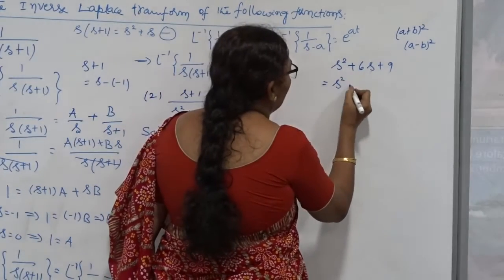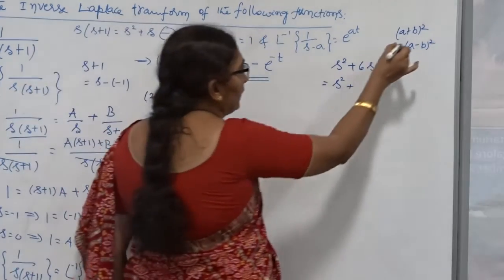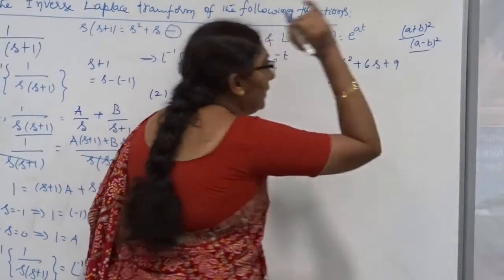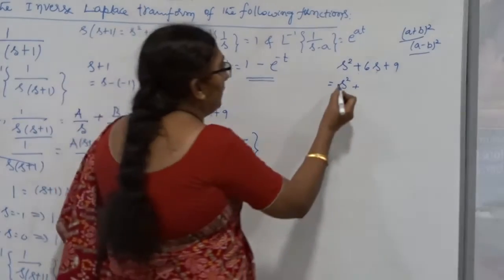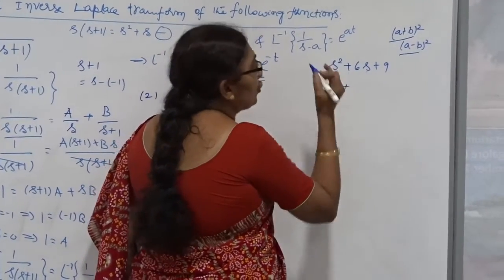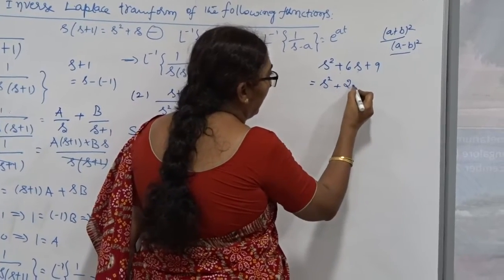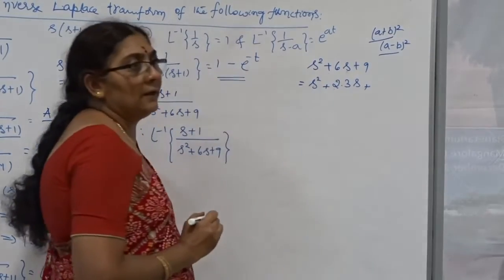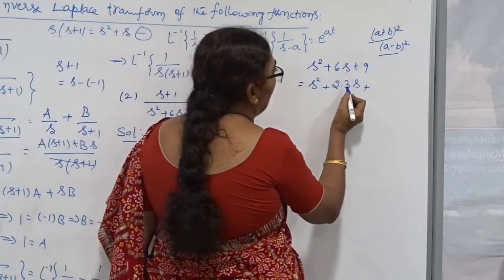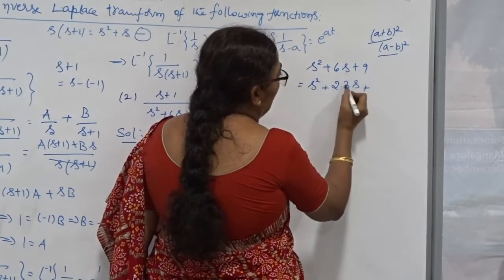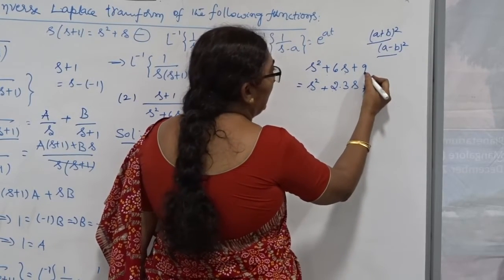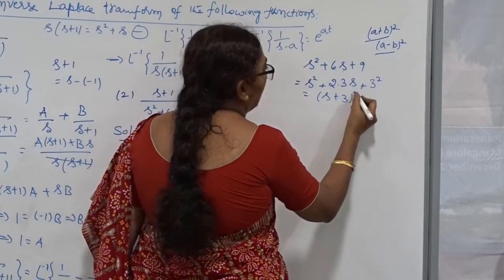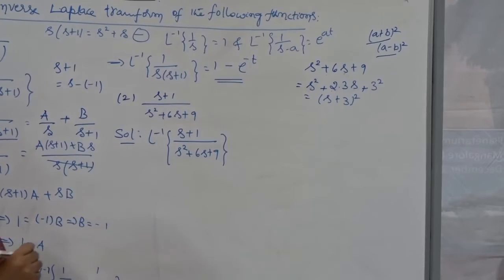What is the meaning of the completing the square method? We try to convert the sum of these terms into either the form of A plus B whole square or A minus B whole square by adding and subtracting appropriate values. We use it whenever the denominator is a polynomial, especially a quadratic. Here, all three terms are positive so we use A plus B whole square. My A is S; splitting 6 into 2 times 3 gives 2AB where B equals 3; and 9 is already 3 squared. Therefore, S squared plus 6S plus 9 equals S plus 3 whole square.